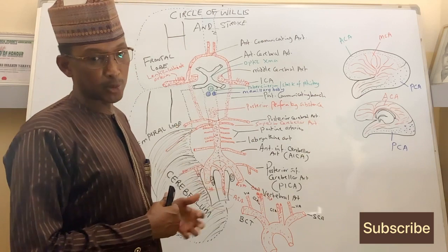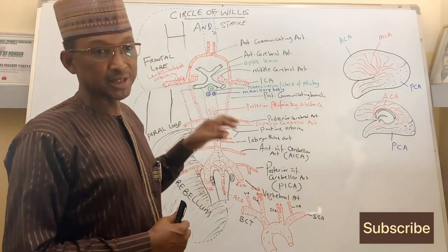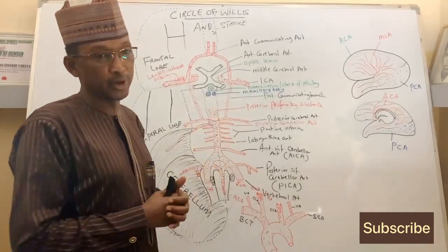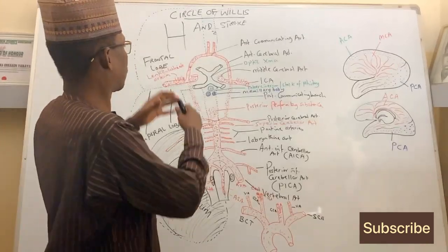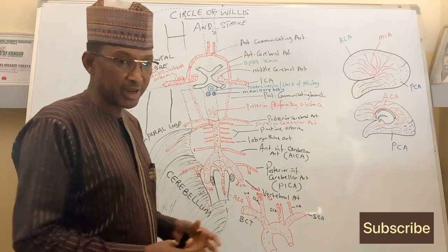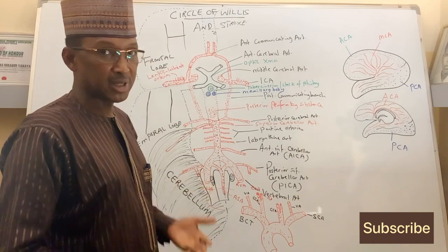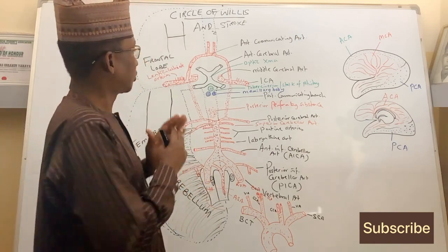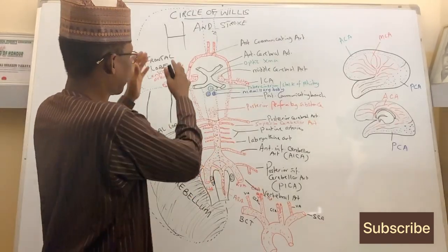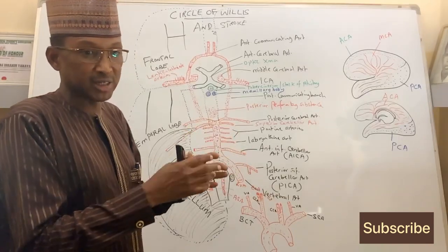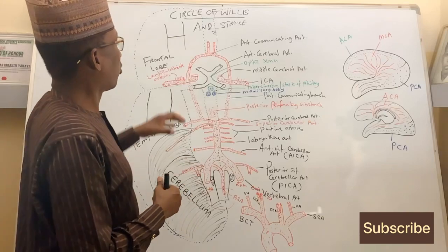Those deep structures include the basal nuclei, internal capsule, diencephalon, and thalamus. The internal capsule is a bundle of axons — white matter fibers coming from the cortex — including corticospinal fibers from the motor area and sensory fibers traveling from the spinal cord through the brainstem to the somatosensory area of the cerebrum. Both motor and sensory fibers conglomerate together in the internal capsule.